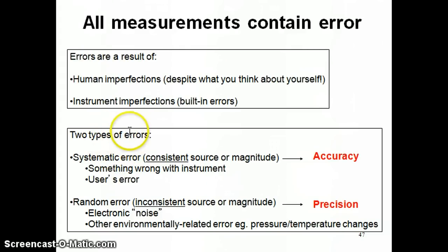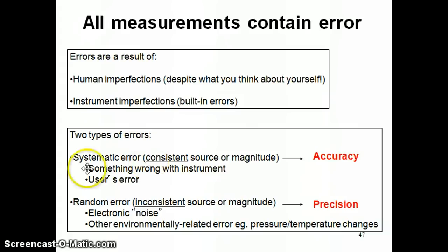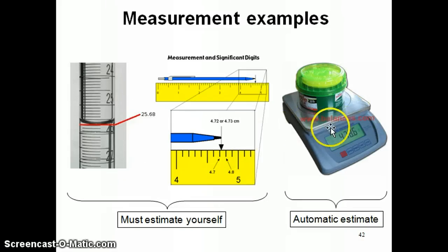As a result, you have errors that creep in when you're making any kind of measurement. We tend to categorize errors into two different types. One type is what we refer to as systematic error — a systematic error is basically an error that has a consistent source or a consistent magnitude. Let's say you're talking about that measurement with the mass, going back to one of these digital balances from one of our earlier slides.